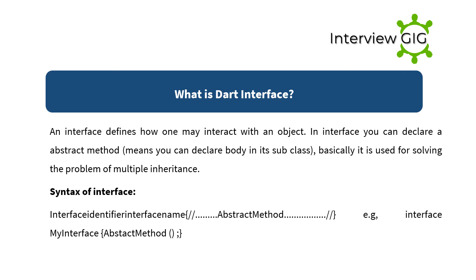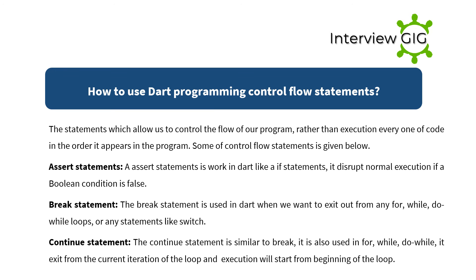What is a Dart interface? An interface defines how one may interact with an object. In an interface you can declare abstract methods, meaning you can declare the body in its subclass. It is basically used for solving the problem of multiple inheritance. Syntax: interface Identifier { // abstract methods, e.g., interface MyInterface { abstractMethod(); } }